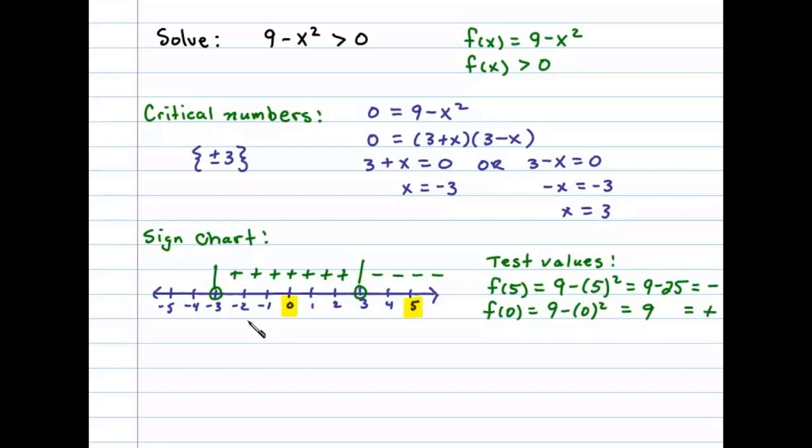Any test value you choose will result in a positive number, so I'll indicate that with pluses in that middle region. Next we'll choose a value in this left region. I'll choose x equals negative 5. f(negative 5) would be 9 minus negative 5 squared. Be careful with your negatives here. That's 9 minus 25, and the result will be negative.